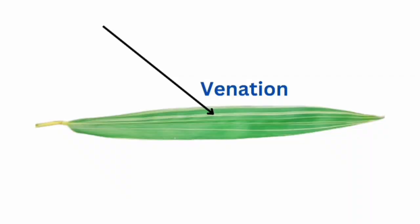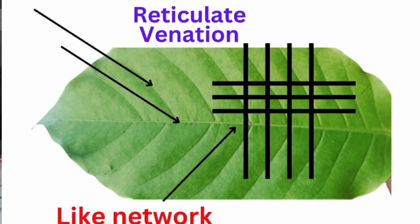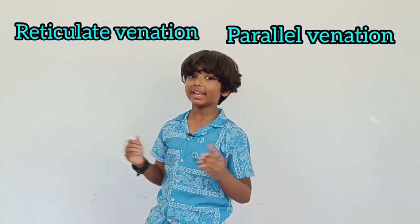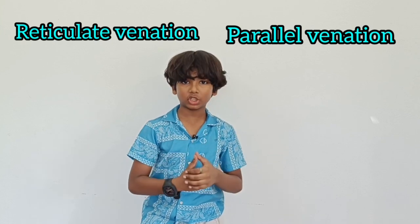What is venation? The arrangement of veins in leaves is called venation. What is parallel venation? When the veins in the leaves look like parallel lines, it is called parallel venation — that is, the parallel arrangement of veins in leaves is called parallel venation. What is reticulate venation? When the veins look like a network in the leaves, it is called reticulate venation — the network-like venation in leaves is called reticulate venation.